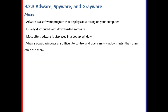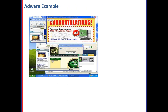Next is Adware. Adware is unwanted software designed to throw advertisements up on your screen, most often within a web browser. Adware popups are difficult to control and open new windows faster than users can close them. For example, an advertisement showing a message like 'Congratulations, you have won a desktop computer' and asking users to download software is a form of adware.